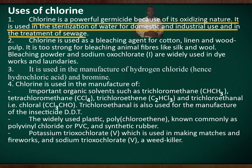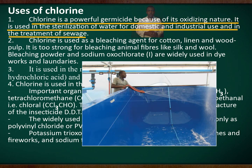Use of Chlorine. Chlorine is a powerful germicide because of its oxidizing nature. It is used in the sterilization of water for domestic and industrial use and in the treatment of sewage.